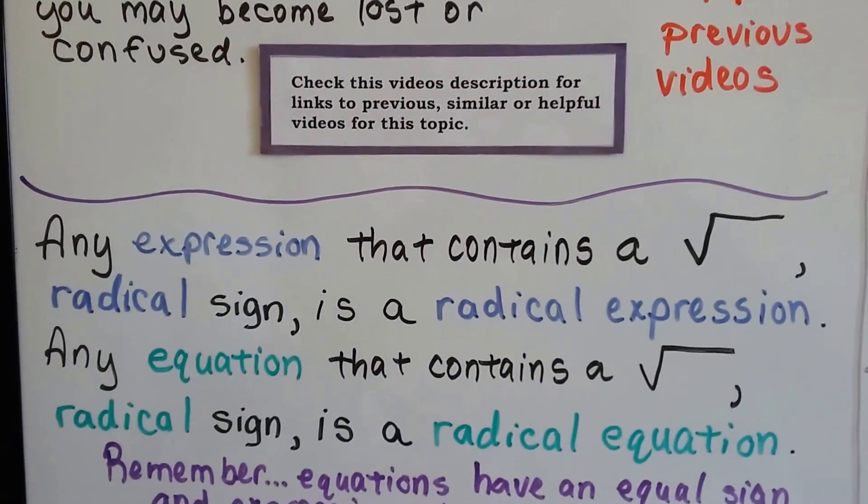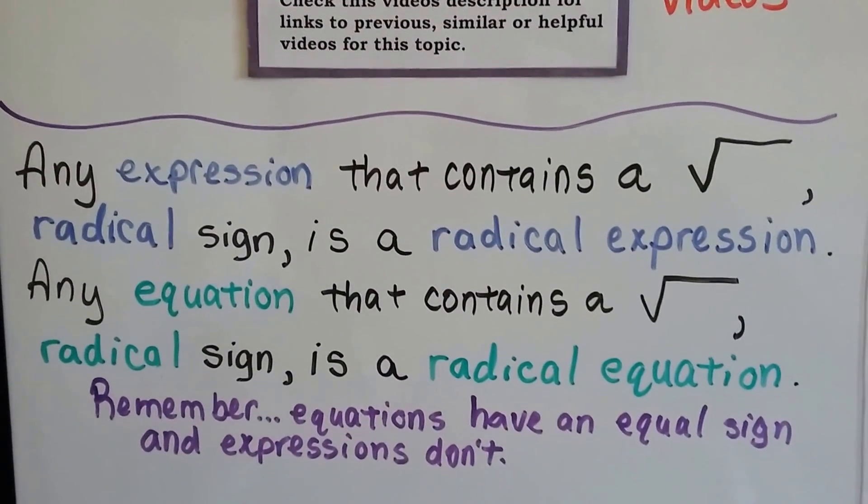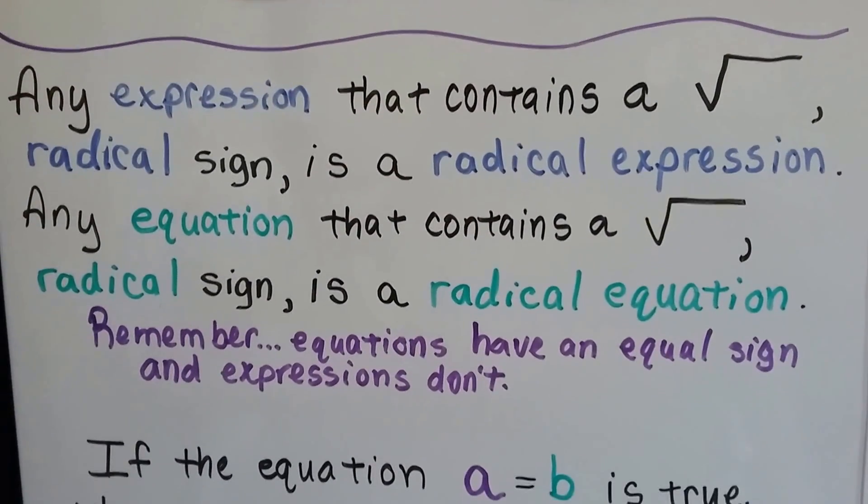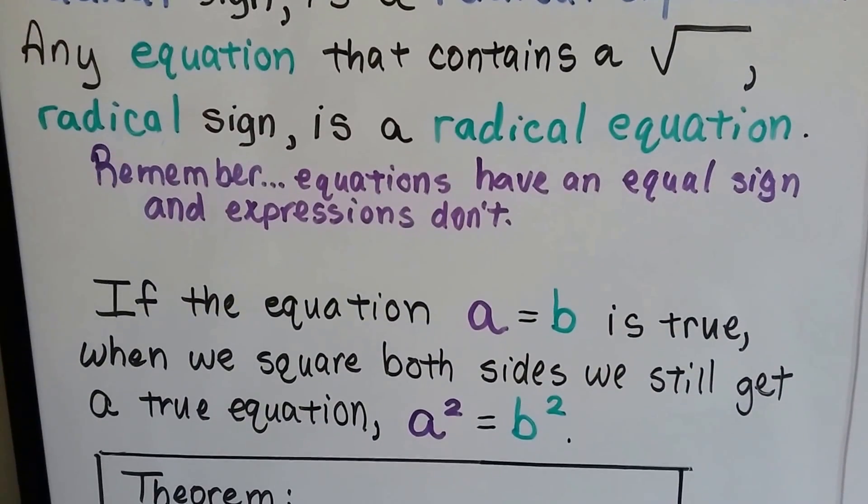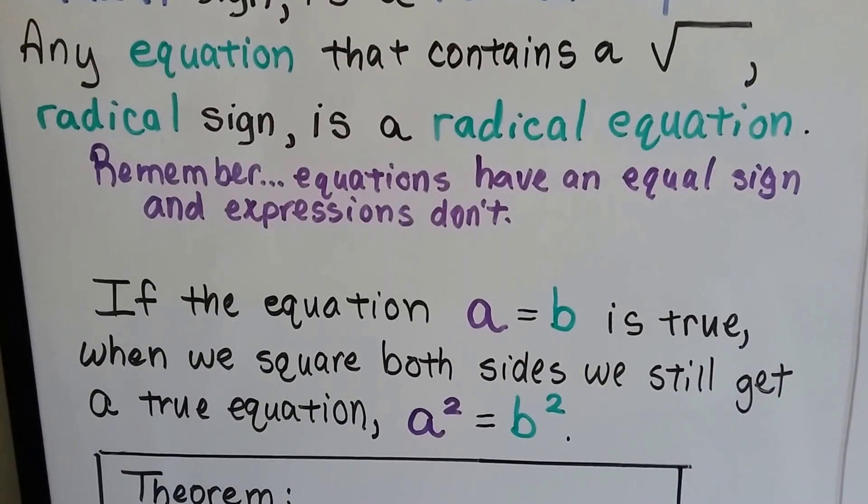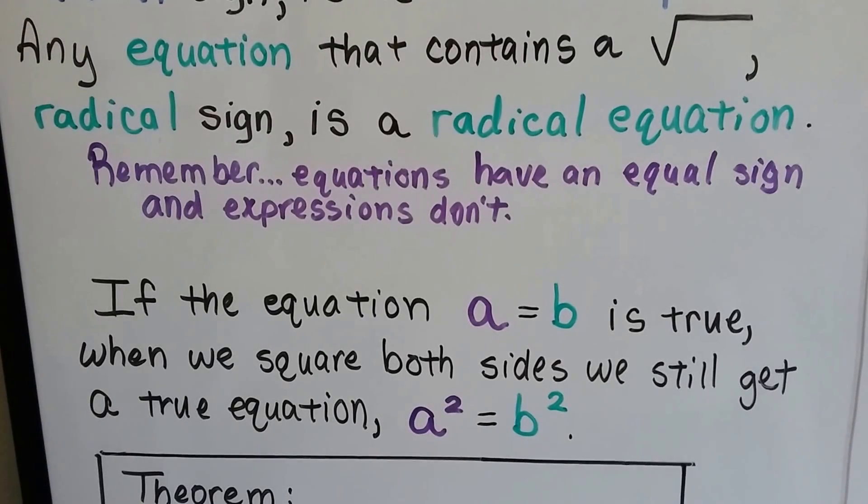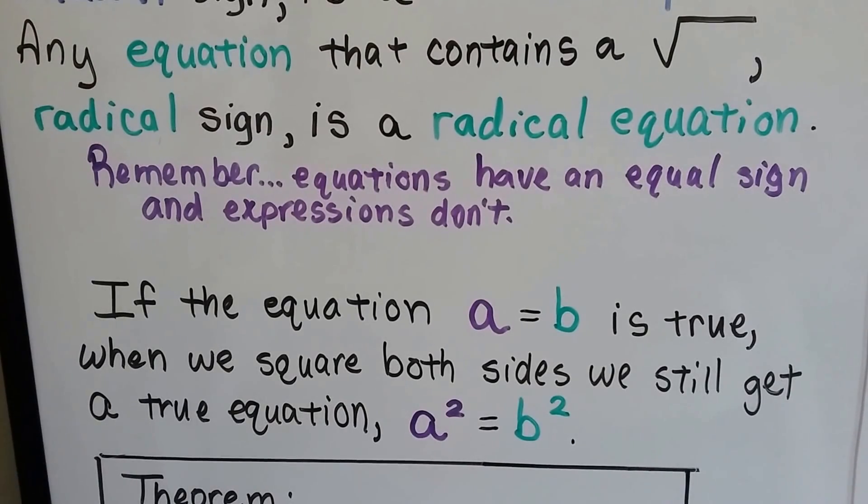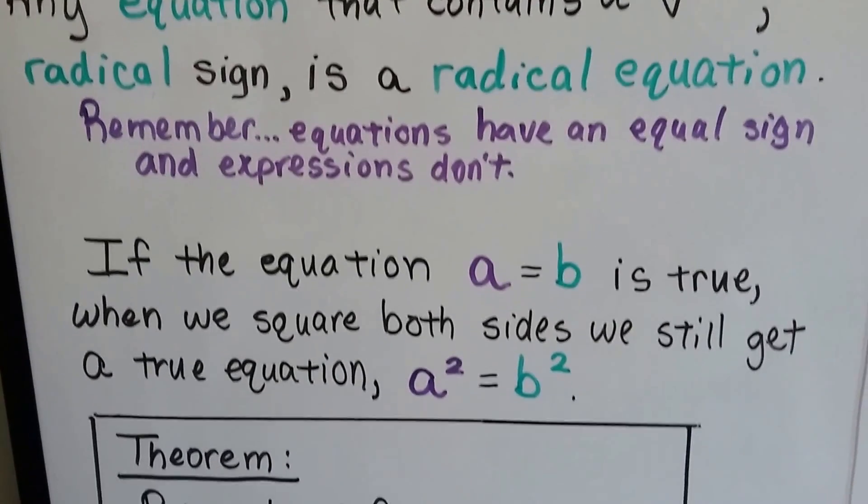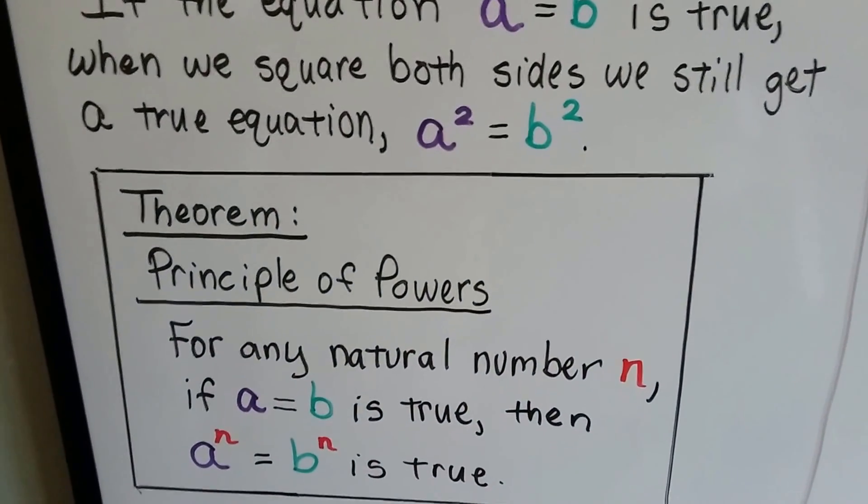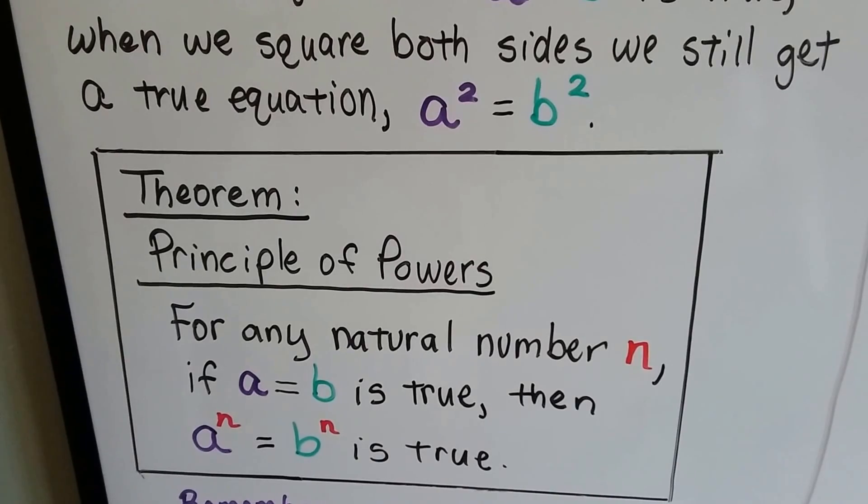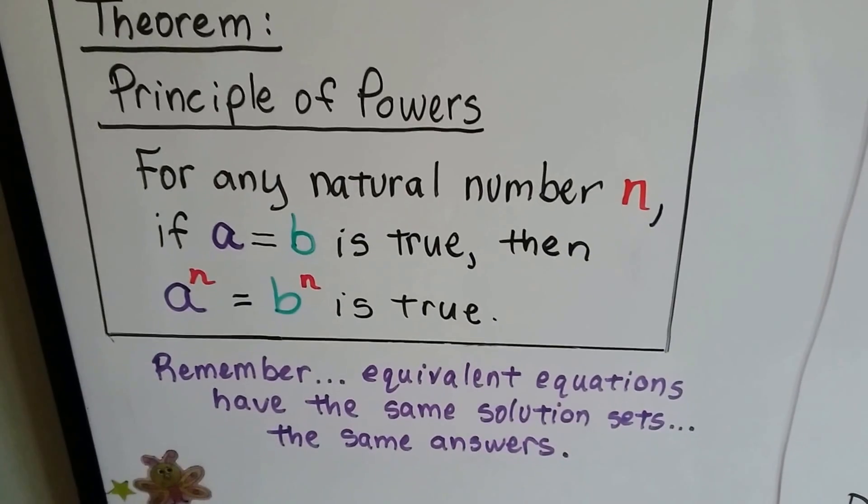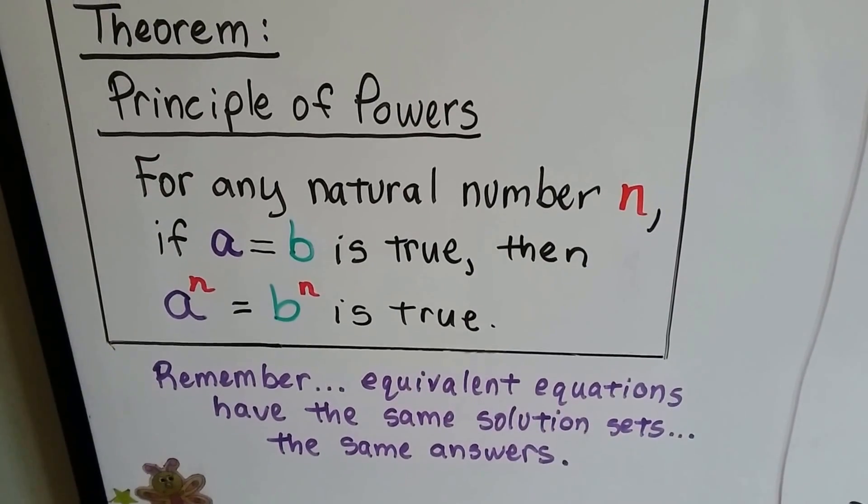Any expression that contains a radical sign is a radical expression, and any equation that contains a radical sign is a radical equation. Just remember, equations have an equal sign and expressions don't. If the equation a equals b is true, when we square both sides, we still get a true equation. We get a squared equals b squared. And if a equals b, anything we do to a that we do to b is going to make them equal each other. Here's our theorem. It's the principle of powers for any natural number n. If a equals b is true, then a to the nth power equals b to the nth power is true. Remember, equivalent equations have the same solution sets, the same answers.